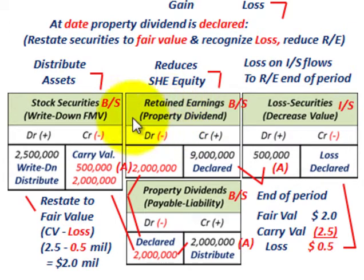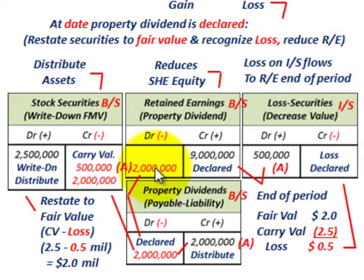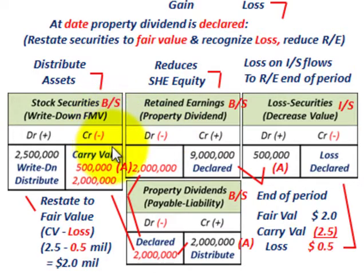In this case it was stock securities. Remember, with property dividends you're distributing assets and affecting shareholders' equity — reducing retained earnings based on the fair value of those assets. That takes care of our property dividends, looking at stock securities being distributed to shareholders.